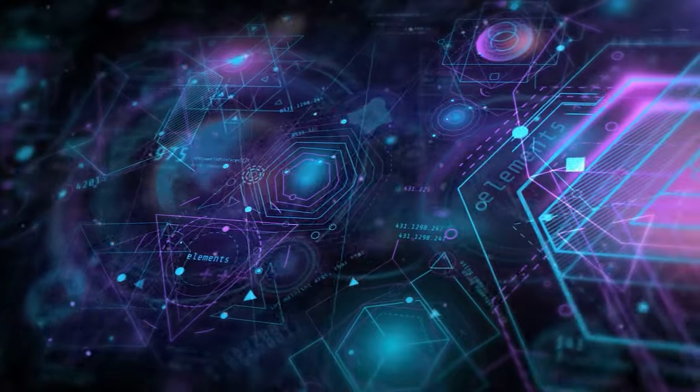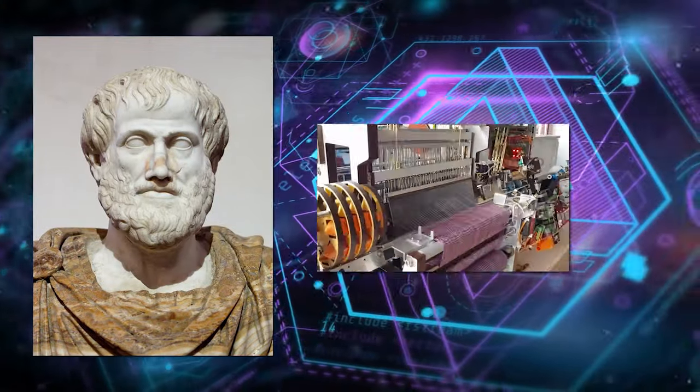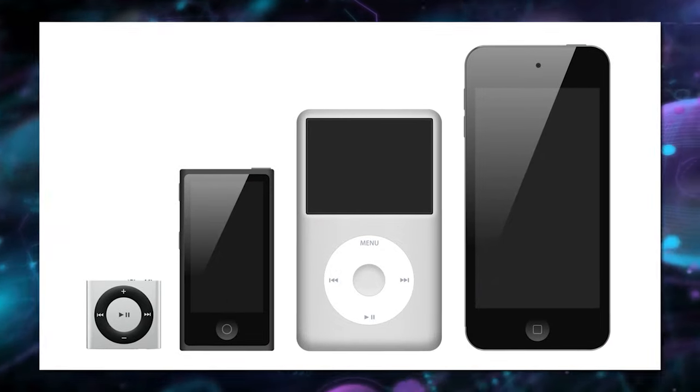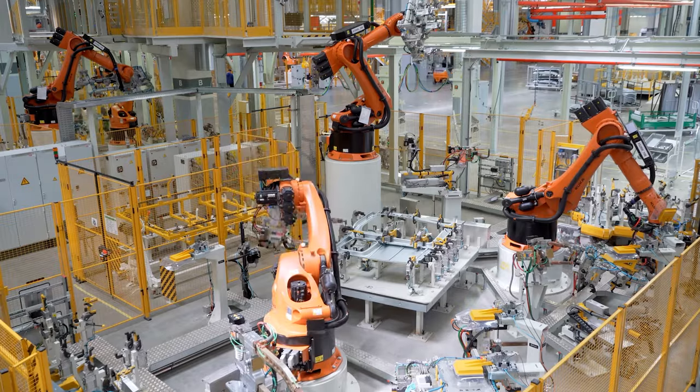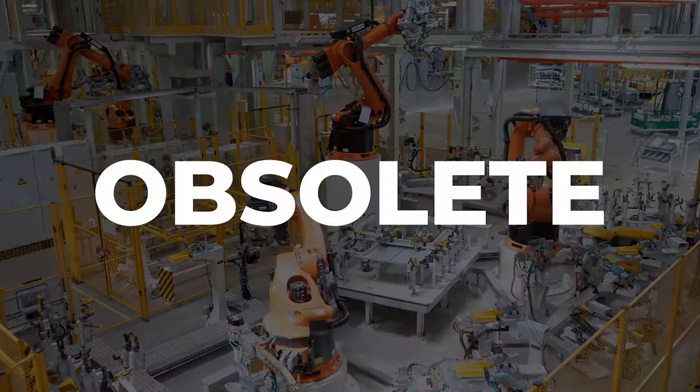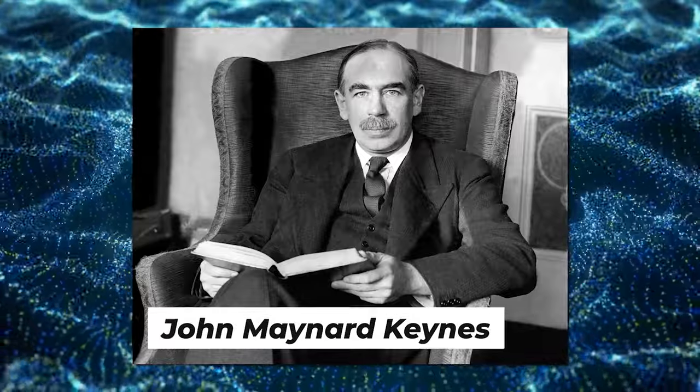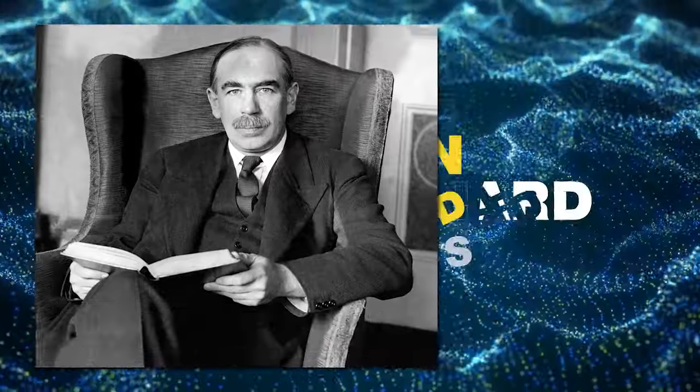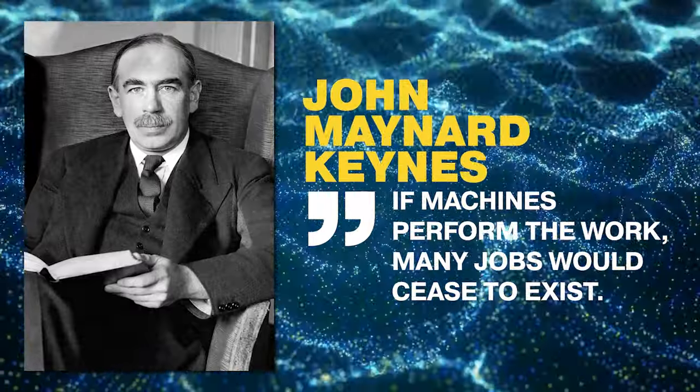The allure of fully automated machines, such as Aristotle's vision of self-operating weaving machines and plectrums that can play music without human intervention, may seem enticing. However, this automation could render human workers obsolete. In the 1930s, John Maynard Keynes introduced the concept of technological unemployment, suggesting that if machines perform the work, many jobs would cease to exist.